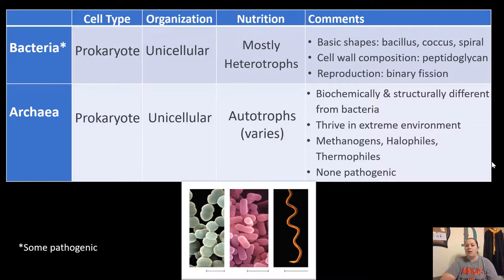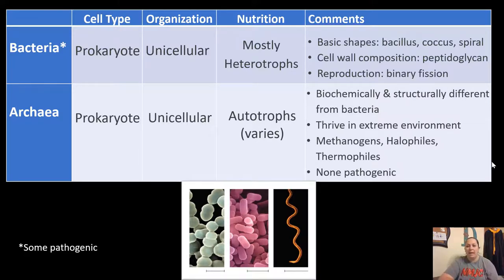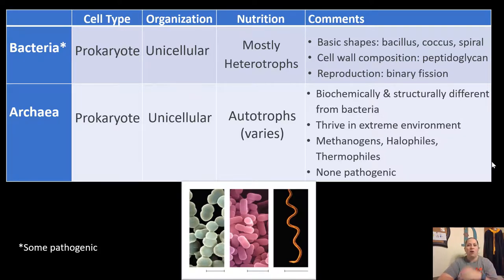Archaea are biochemically and structurally different from bacteria. They used to be grouped together in what was known as monera, but were separated into two domains once scientists found how different they are. Archaea thrive in extreme environments like the bottoms of volcanoes, inside geysers, and the bottom of the ocean. Many are extremophiles: thermophiles love high heat, halophiles love high salt content, and methanogens create methane gas. Importantly, archaea are non-pathogenic — none of them cause disease in humans.